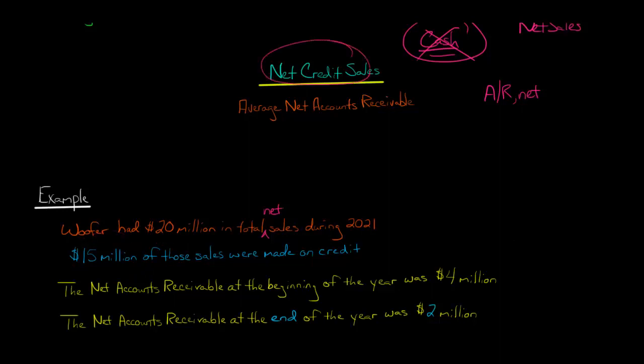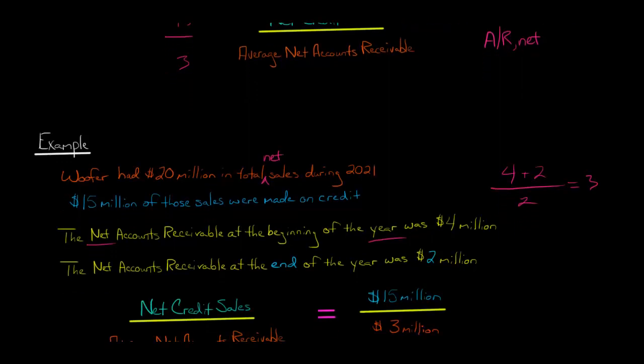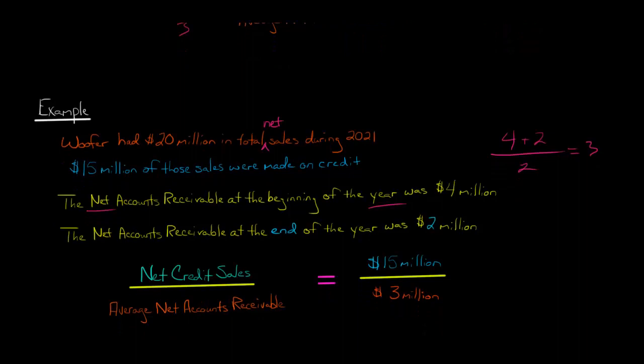So that's going to be in the numerator here when we go to calculate this ratio. Now, to get the denominator, we have to say what was the net account receivable at the beginning of the year? And let's say it was $4 million. And then at the end of the year, it was $2 million. So what we do is we just take the 4 plus 2 and divide it by 2 to get the average. So 6 divided by 2 is 3. So our denominator is going to be 3, and then our numerator is going to be 15. So we can see that the account receivable turnover ratio for this company is going to be 5.